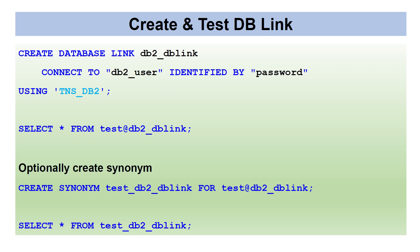Once the database link is created, you can access tables in the DB2 database from Oracle. For example: SELECT * FROM test@db2_dblink retrieves the test table via the DB link pointing to the remote DB2 database. Optionally, create a synonym: CREATE SYNONYM synonym_name FOR db2_table@db_link. When you select from the synonym, you are retrieving data from the remote DB2 database.